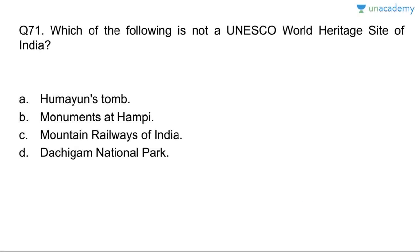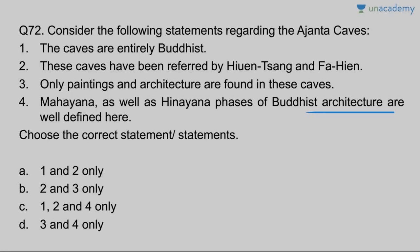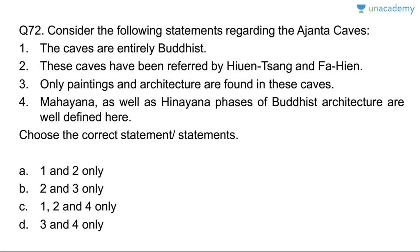Question seventy-one: which of the following is not a UNESCO World Heritage Site of India? Humayun's Tomb — yes, it is one. Mountain Railways of India — yes. Dachigam National Park — this is not a World Heritage Site. Dachigam is located 22 kilometers from Srinagar and has been a major protected area since 1910.